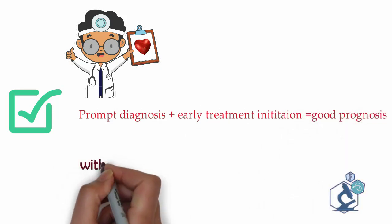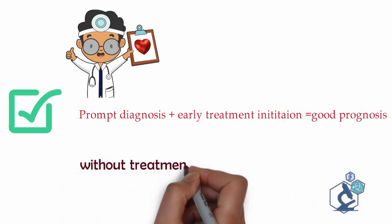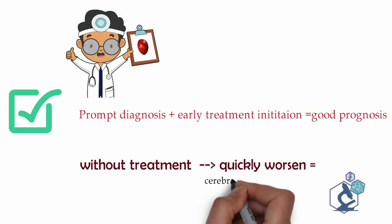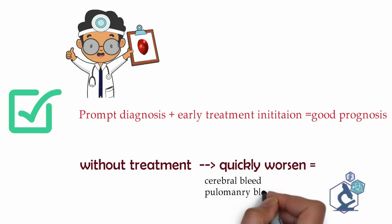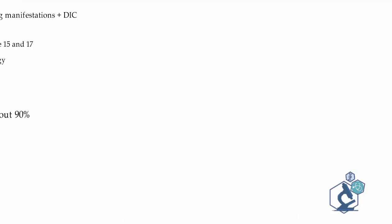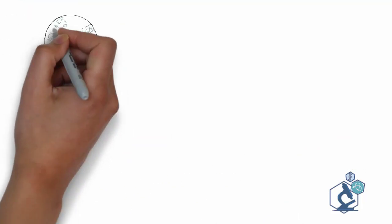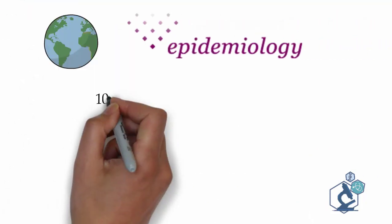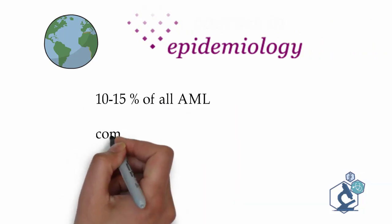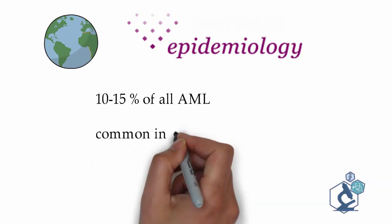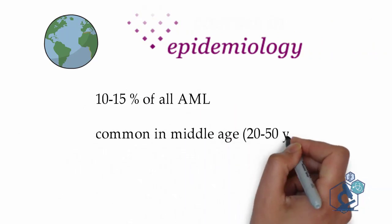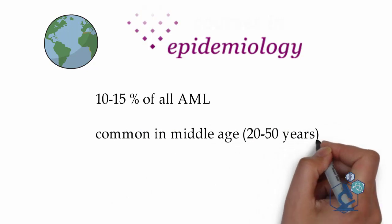Without treatment, patients quickly worsen and may develop cerebral or pulmonary bleeds, which can ultimately prove fatal. Regarding epidemiology, APML accounts for 10 to 15% of AML. Although it can occur at any age, it is most common in middle-aged adults, with equal incidence among males and females.